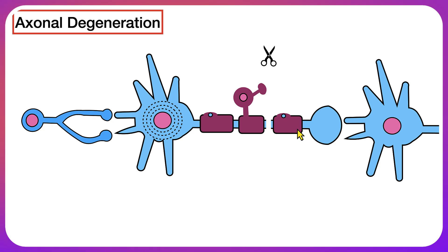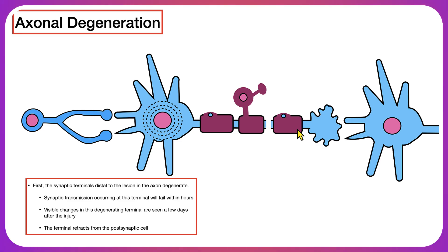The process of axonal degeneration is going to occur. The first step of axonal degeneration is going to be the degeneration of the synaptic terminals distal to the lesion. What we're going to see in this process is that synaptic transmission is going to stop or fail within hours of sustaining the injury. Synaptic transmission occurring at the terminal distal to the lesion will fail within hours of the injury.